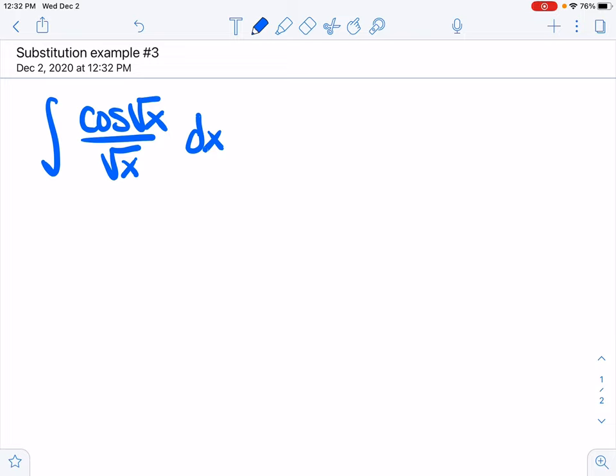In that case, you just want to pick something. And the only thing I can see that's maybe worth picking is to try u equals the square root of x. Maybe 1 over the square root of x, but this is more likely. And doing these problems is going to build that intuition to the point where you know what you should choose for u.